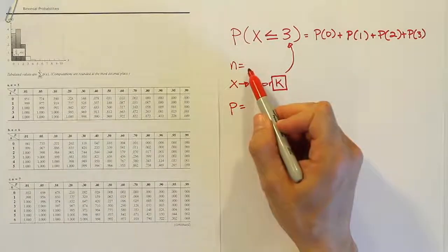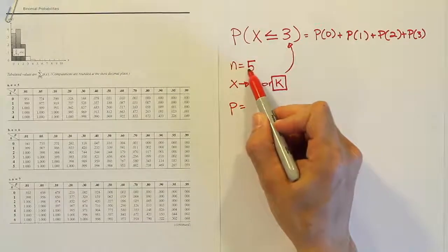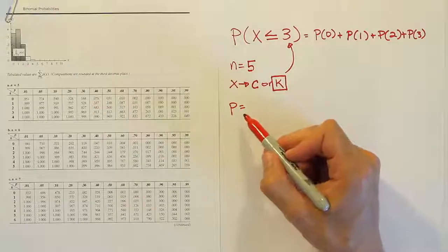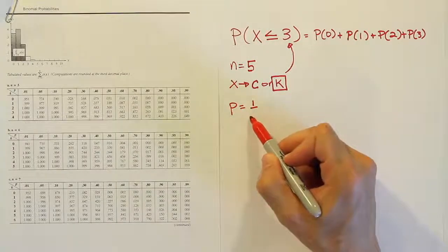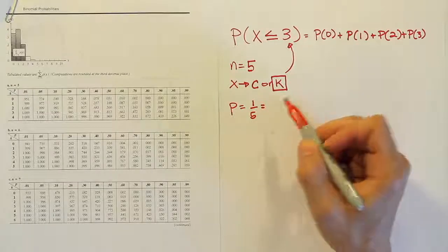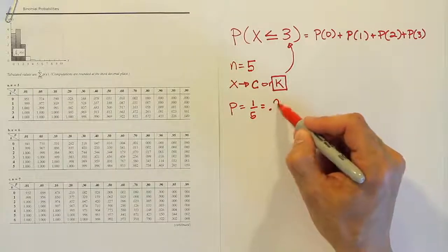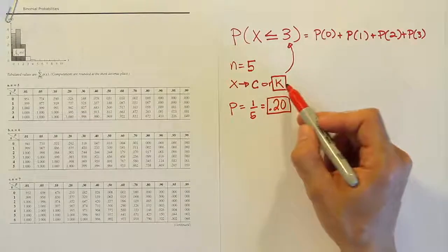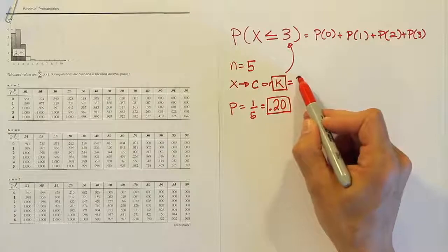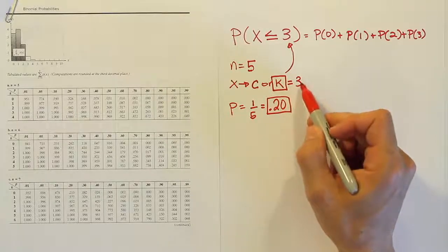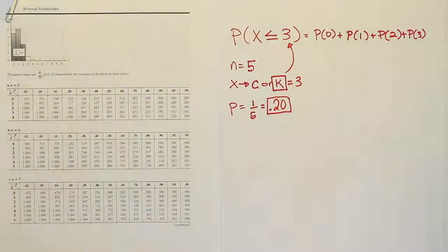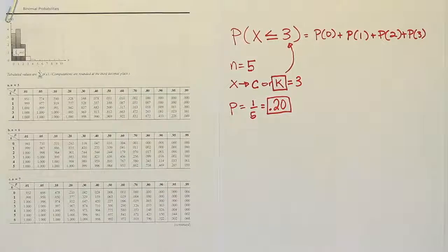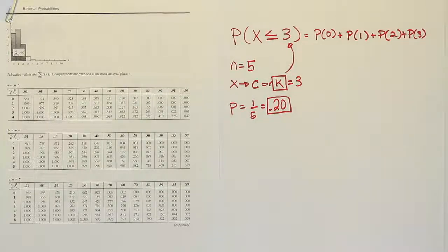So let's think about it for our problem here. The n was 5 trials because we were taking 5 guesses on 5 multiple choice questions. The p was 1 fifth. There was a 1 fifth chance that we would get it correct when we took a guess. So we'll call that 0.20 as a decimal. We're going to need that for the table. And then finally, we have a k. In our case, our k is 3. That's the number we want to start with and go down to 0 from. So let's go ahead and take a look at our table and see if we can find these values to come up with the cumulative probability that we have less than or equal to 3 successes.